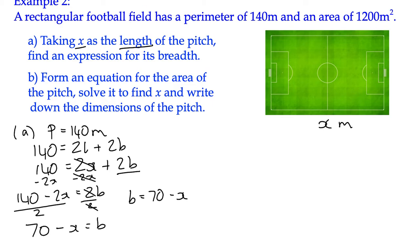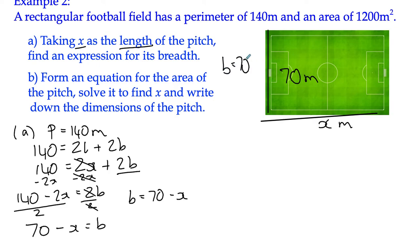There are other ways of working that out. You could say: if the whole perimeter is 140, then one length and one breadth together must be half of that, which is 70. Therefore, if the total is 70 between length and breadth, the breadth would have to be 70 minus x. So you could do it informally like that. Either way, we've come up with the expression for the dimensions.